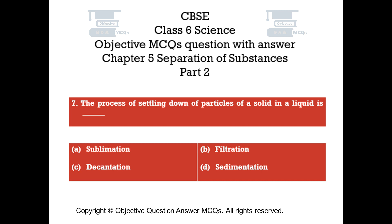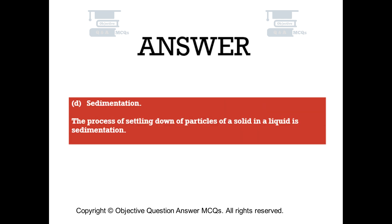Question number 7. The process of settling down of particles of a solid in a liquid is: Option A, Sublimation. Option B, Filtration. Option C, Decantation. Option D, Sedimentation. The right answer is Option D — Sedimentation. The process of settling down of particles of a solid in a liquid is sedimentation.